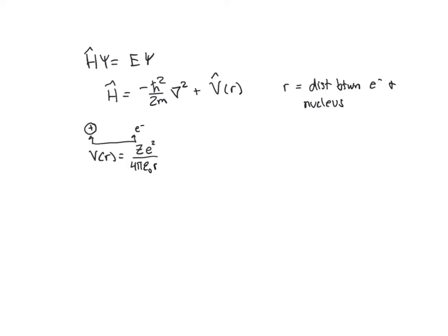And so if we define our variables here, we have Z is the charge on the nucleus, so the atomic number. E is the charge in Coulombs for an electron or a proton.